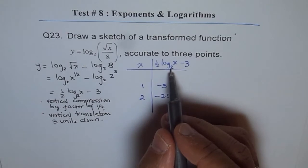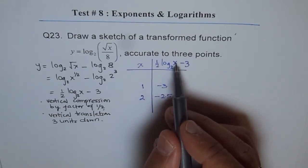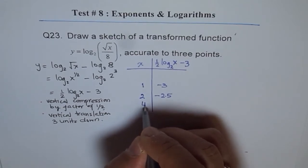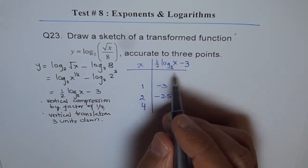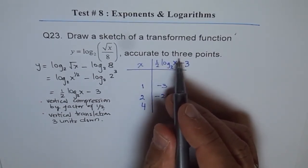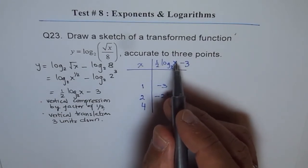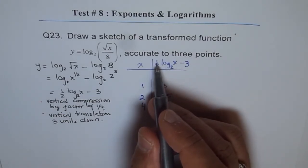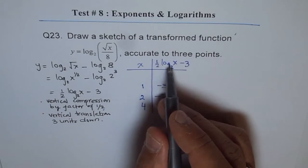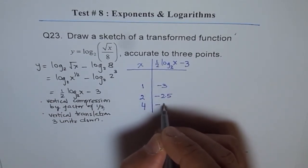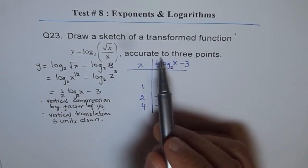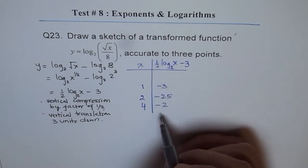Now, since it is base 2, even 4 is a good value, because 2 to the power of 2 is 4. So x equals 4 is a good value to take. So 2 to the power of 2 is 4, so it is 2 and 2 times half is 1. So we get 1 minus 3 as minus 2. Since we need accurate to 3 points, these are very good points to take.